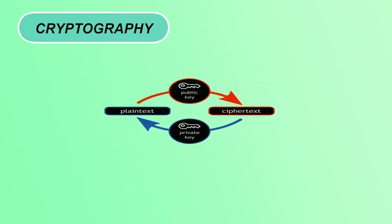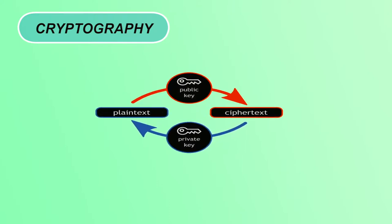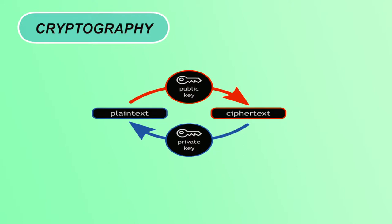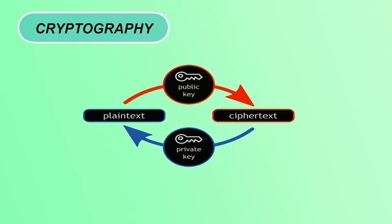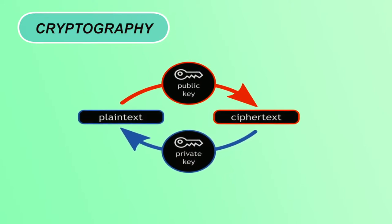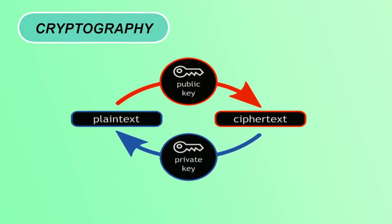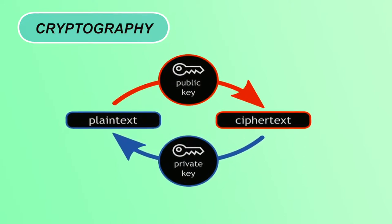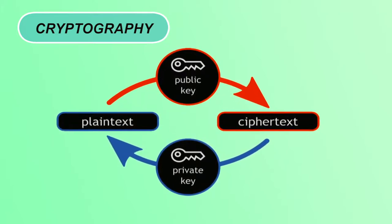In this figure you can see some terms like plaintext, ciphertext, public key and private key. I will explain all these terms in detail in further slides. Basically, the original message which we are trying to convert to non-readable form to prevent it from attackers is called plaintext, and the converted form of message is known as ciphertext. We can perform this process with the help of a key.